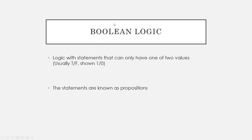Boolean logic is logic with statements that can have only one of two values: true or false. If you ever see 'Boolean,' just know that a statement can only be true or it can be false. Sometimes these are shown as one and zero — if a value is one, that means it is true; if it's zero, that means it is false. The statements we use in Boolean logic are also known as propositions.